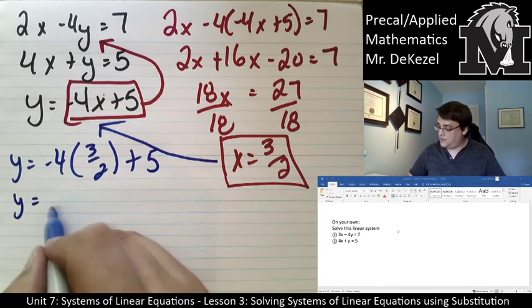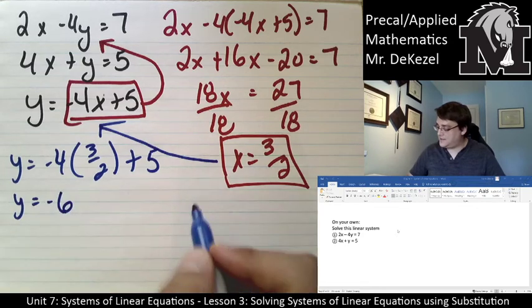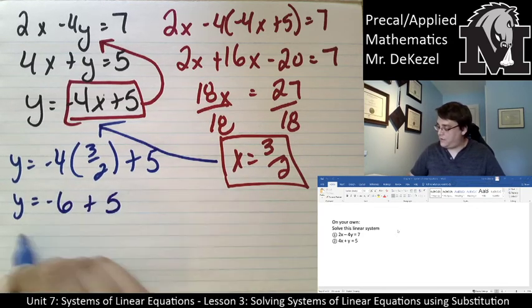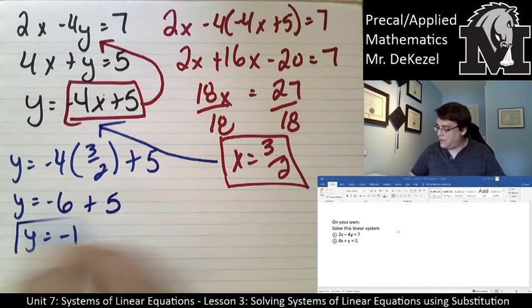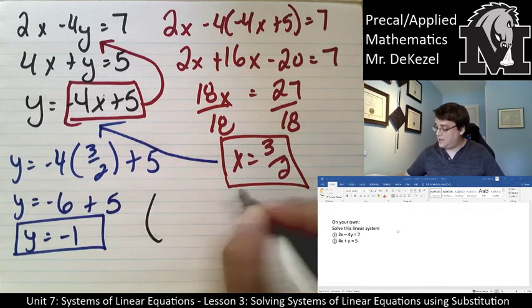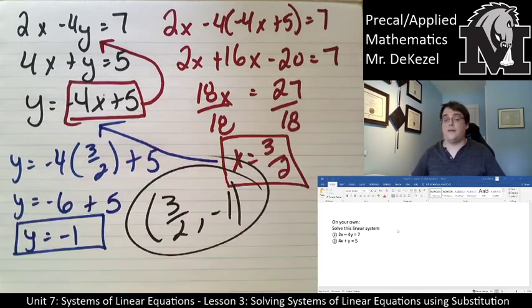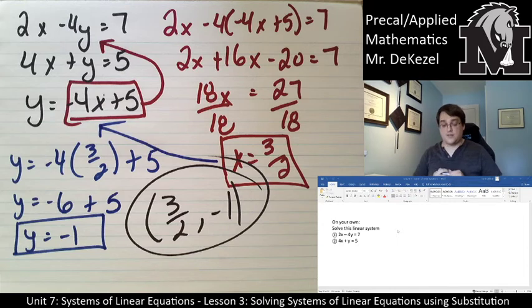y is equal to, that's negative 12 divided by 2. So that's negative 6 plus 5. y is equal to negative 1. And that means I have my two points, my two halves of a point. 3/2 for x, minus 1 for y. That is what our solution is.